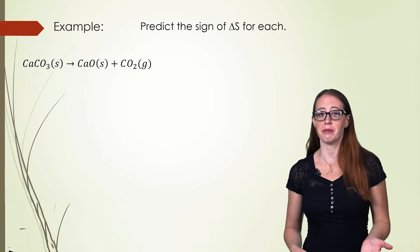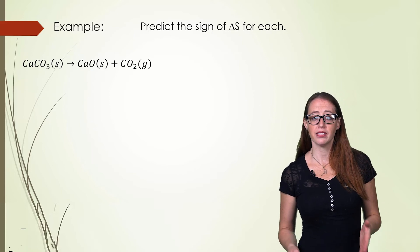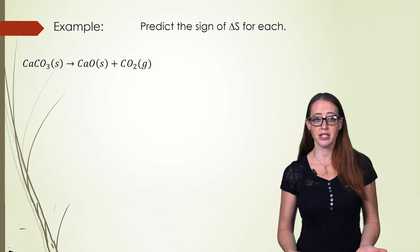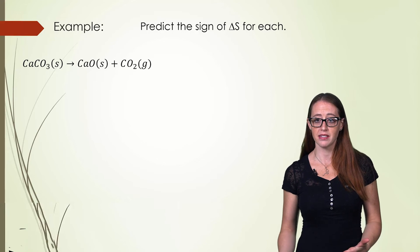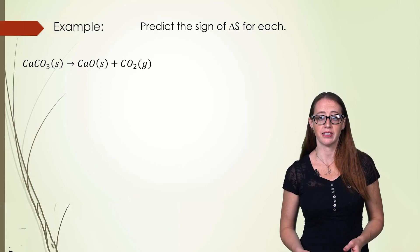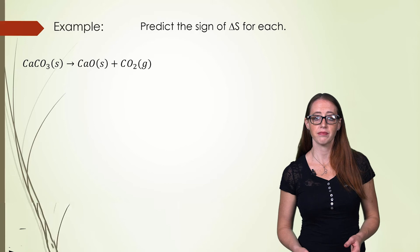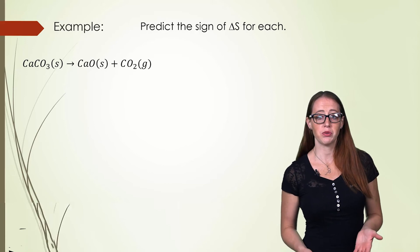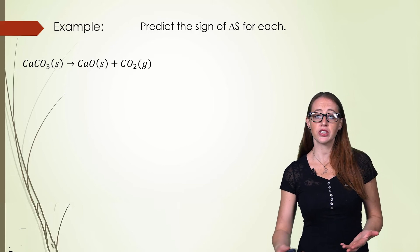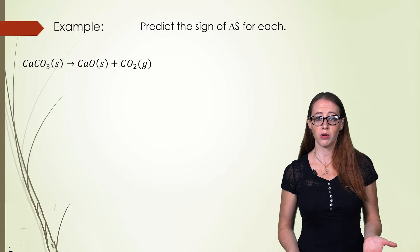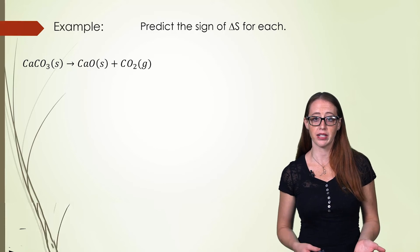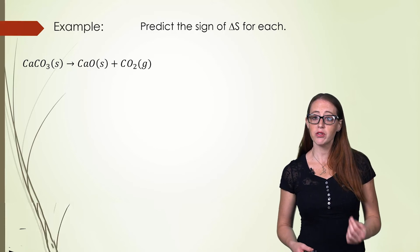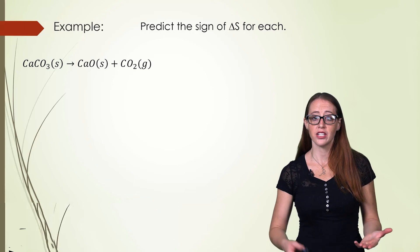Let's do one more example. Take a moment, look at this, pay attention to the number of moles and the phases, and take a guess before moving on. In this case, we have two things happening. It is increasing in moles from one mole of reactant to two moles of product, and one of those changes state from a solid to a gas.